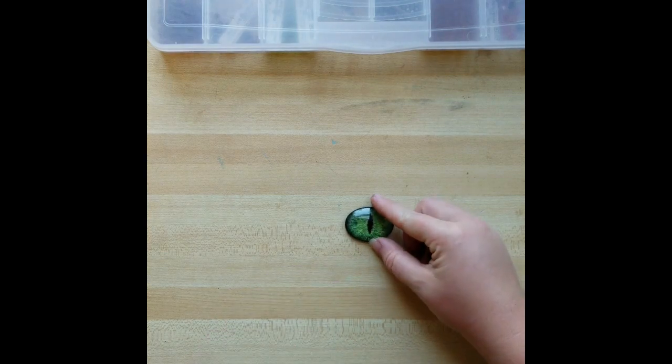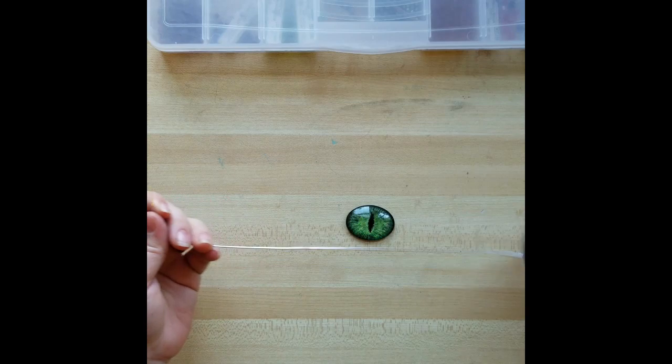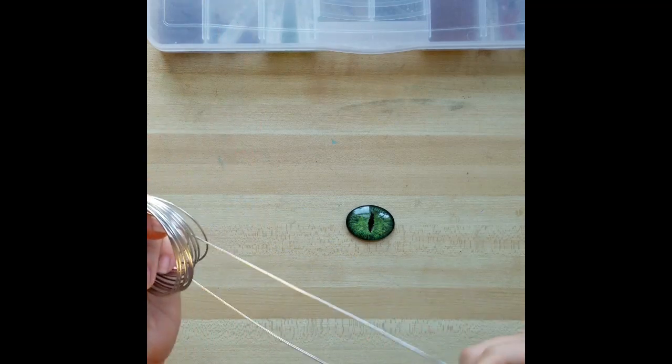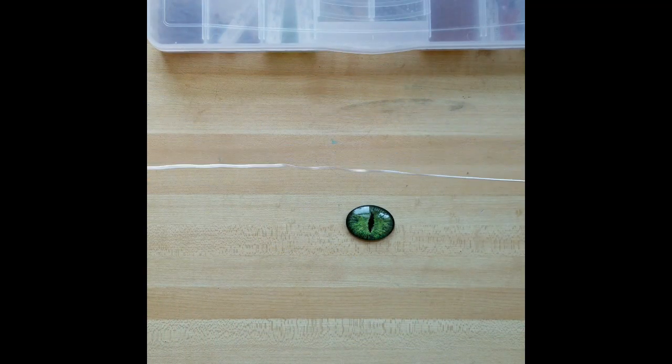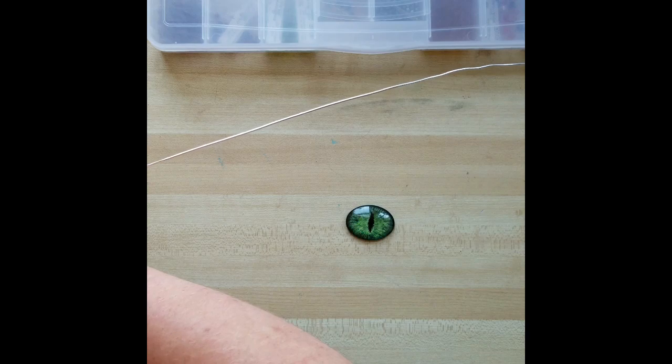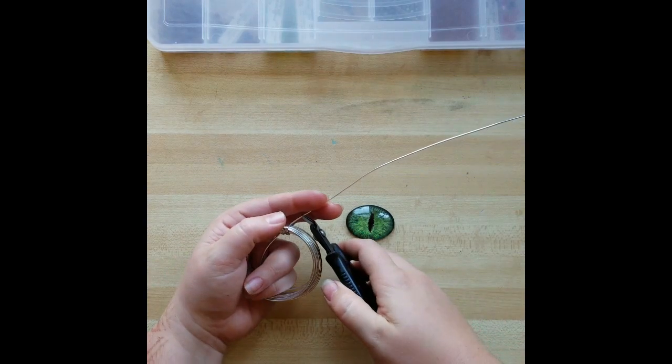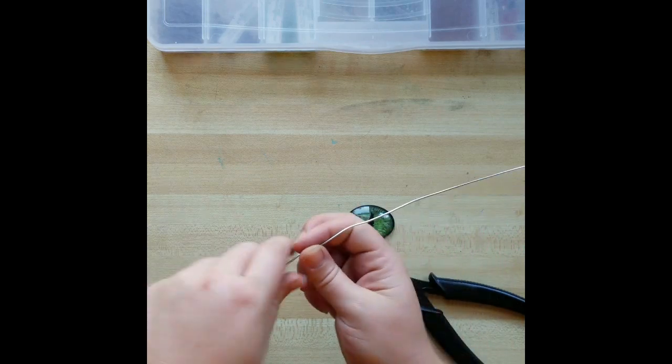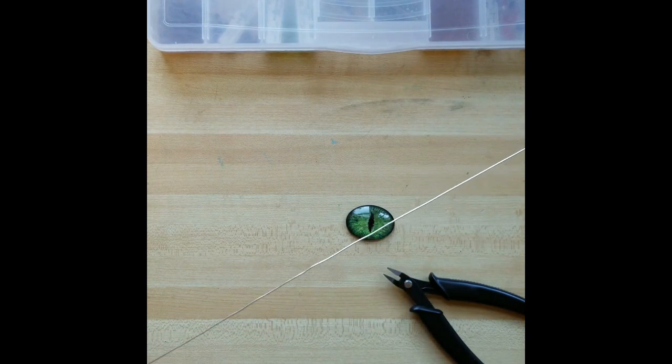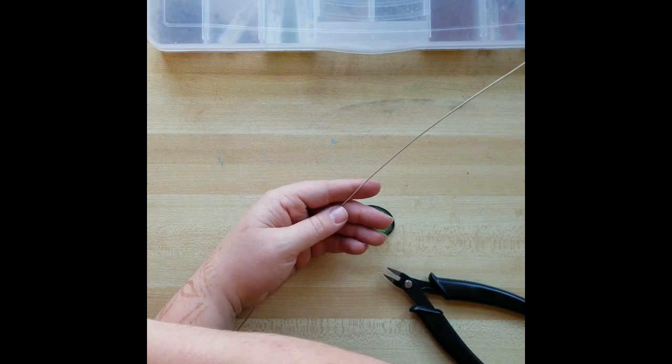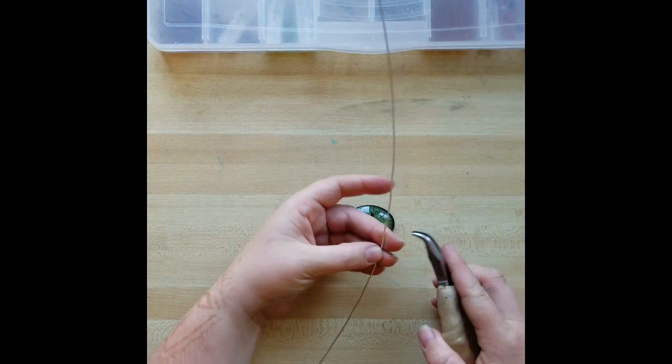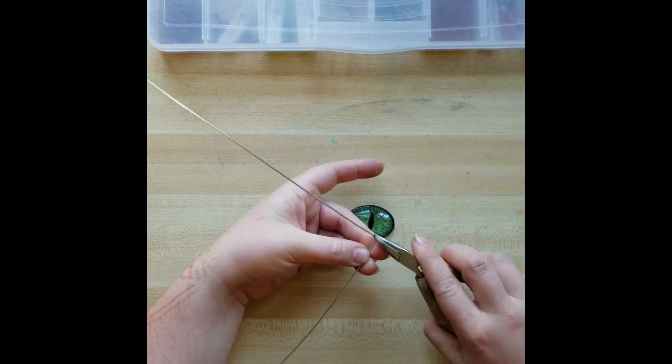So the way that I'm going to be wrapping here is very similar to one of my older tutorials. I'm going to pull off probably about a yard or a meter of wire and I'm going to go ahead and snip it. And you can straighten it with your fingers or with your nylon jaw pliers. This is a pretty soft aluminum, so I'm just doing it with my hand.